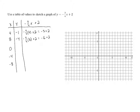When we plug in zero, we've got negative three-fourths times zero plus two. Anything times zero is zero, so negative three-fourths times zero is zero. And we have zero plus two, which is two.